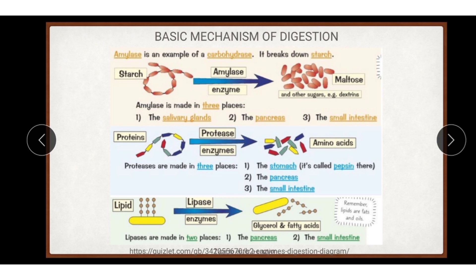Now, proteinases — protein-digesting enzymes. Proteinases are generally released in inactive form because their active form would hydrolyze cellular and extracellular proteins of the organism in the absence of food. When proteinase enzymes react, they form amino acids. Proteinases are made in three places: the stomach, pancreas, and small intestine.